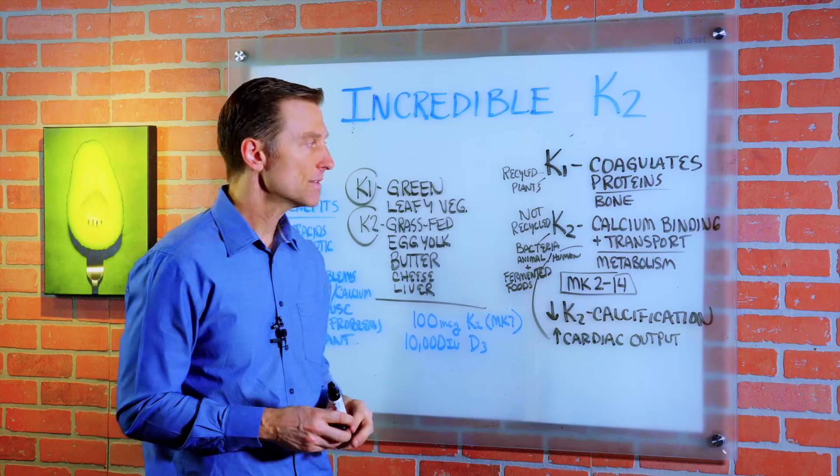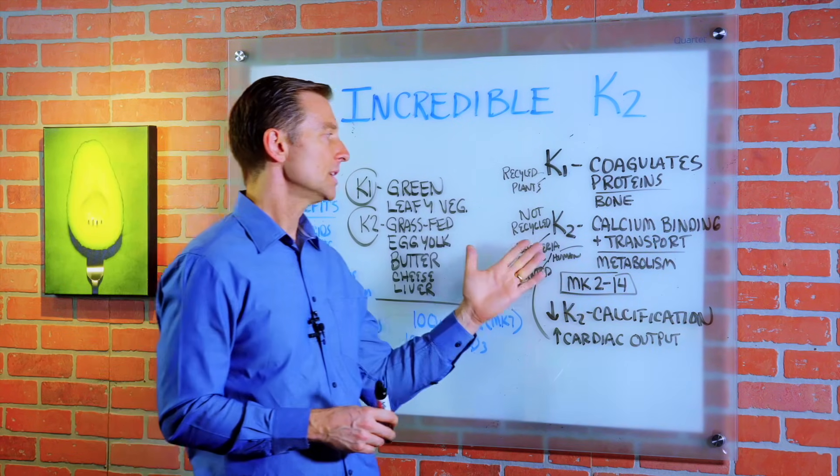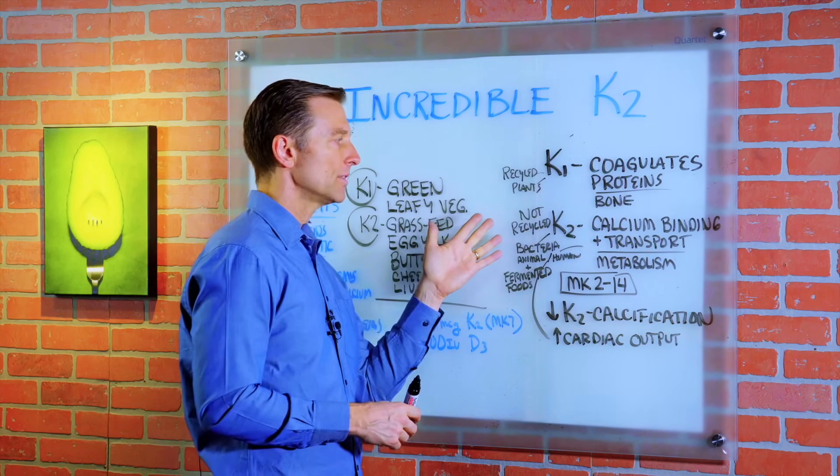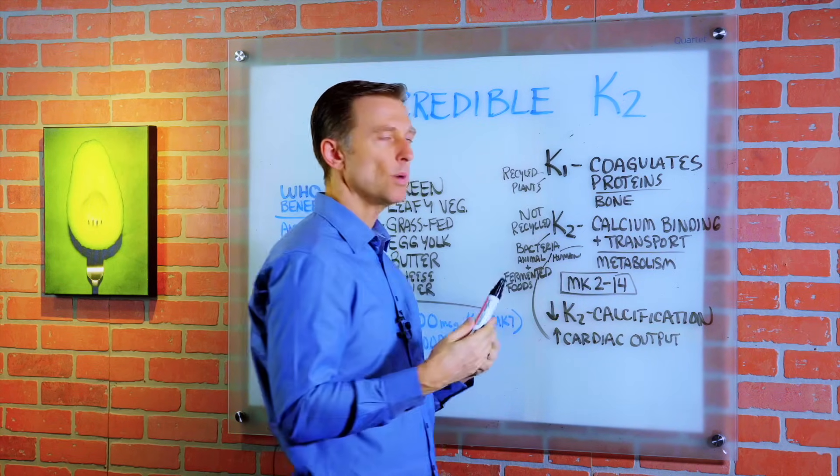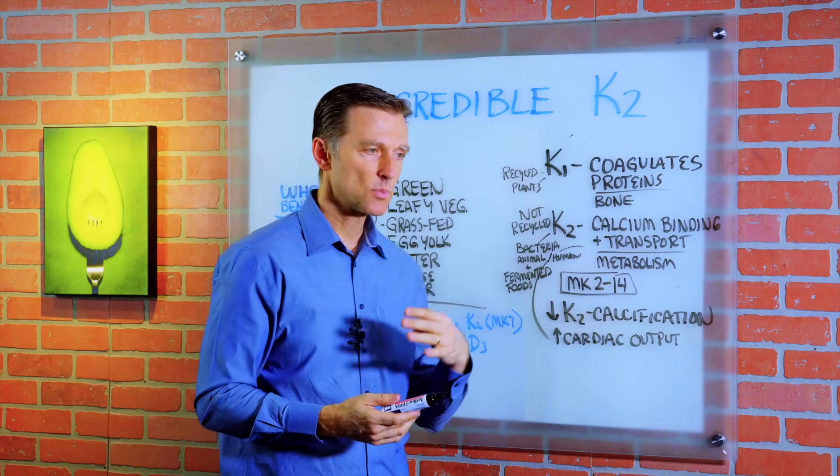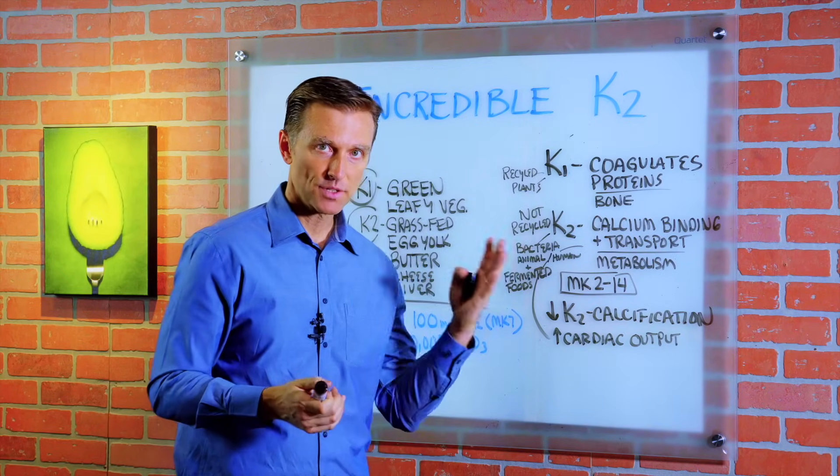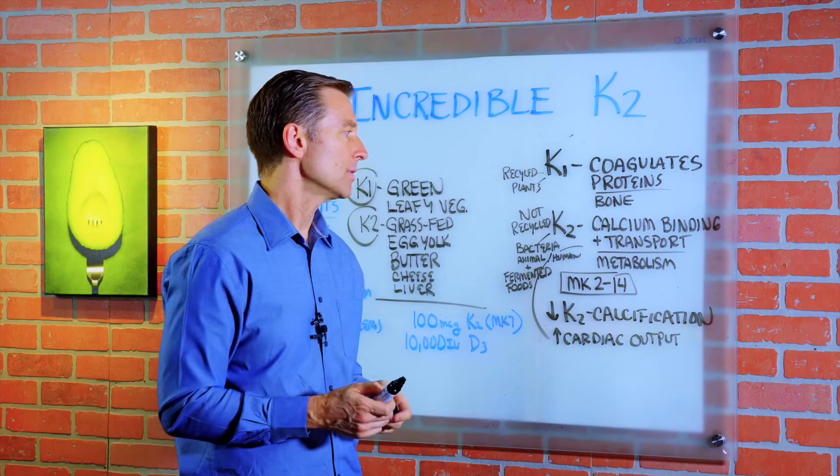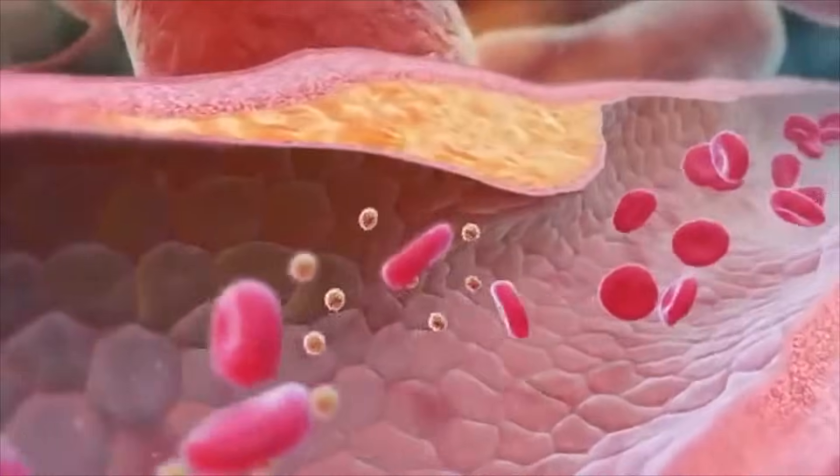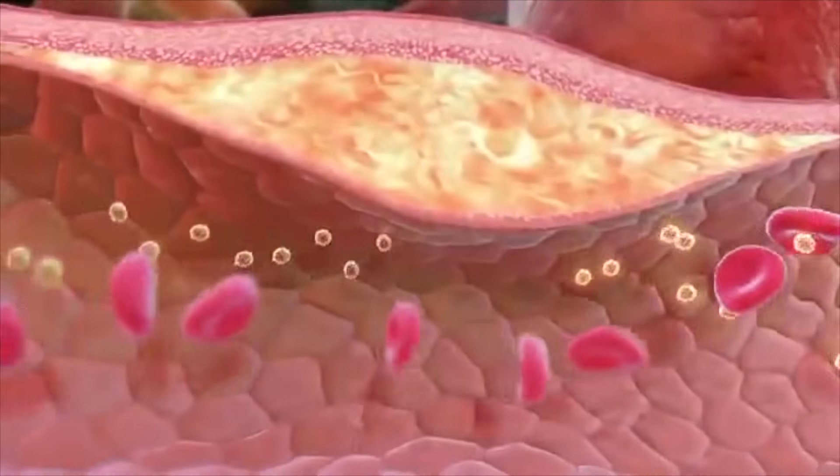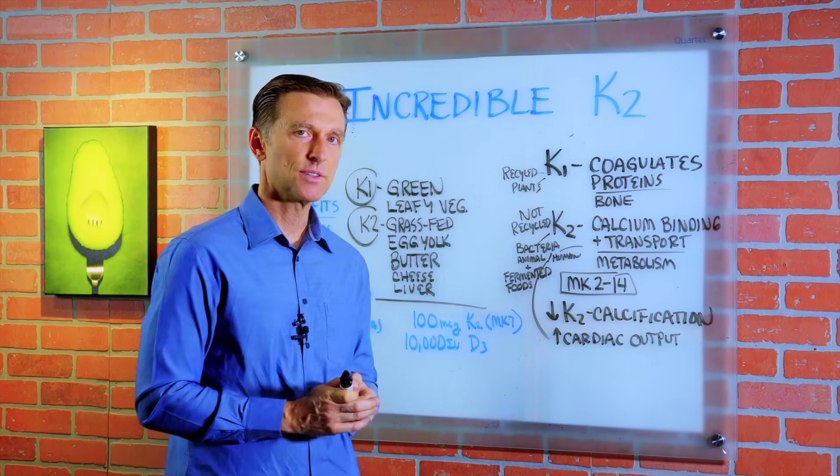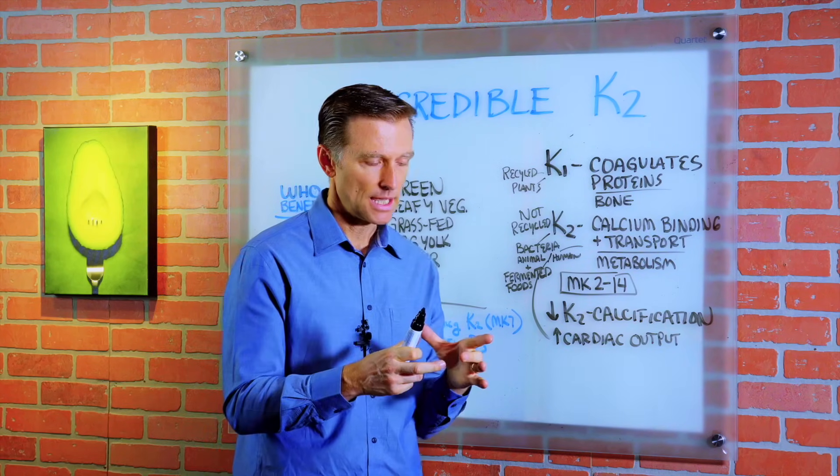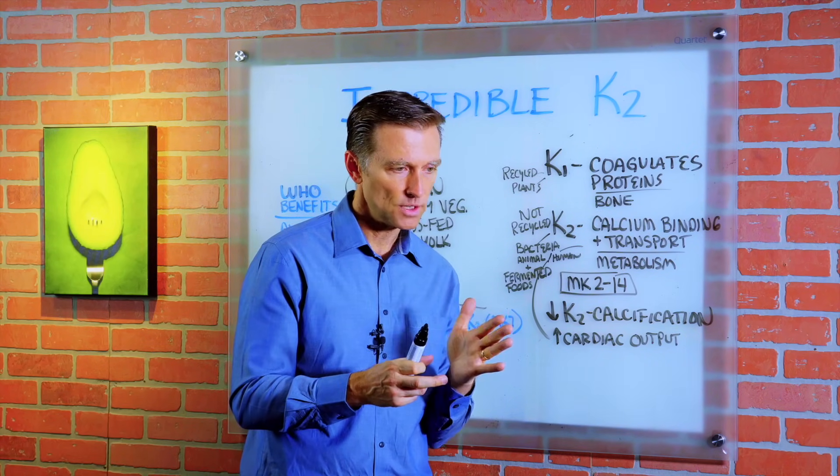K2, on the other hand, is very different. A lot of people are deficient in it. It's not recycled very readily and it basically binds calcium in the bone and helps transport calcium out of the soft tissues. So it takes calcium from the places it shouldn't be and puts it in the place that it should be. But it's also involved in your metabolism, in the mitochondria, turning food into energy.